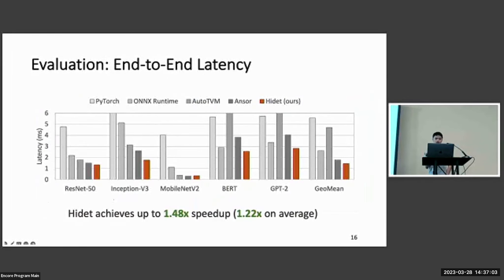Here, we compare the end-to-end latency optimized by the frameworks and compilers. And we can see that Hidet can achieve up to 1.48 times speedup and 1.22 times speedup on average.